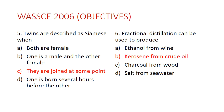Question five: twins are described as Siamese when A) both are female, B) one is male and the other female, C) they are joined at some point, D) one is born several hours before the other. The answer is C — they are joined at some point. Siamese twins occur when the twins are not able to separate and may share the same organs. Ben Carson famously successfully separated Siamese twins.